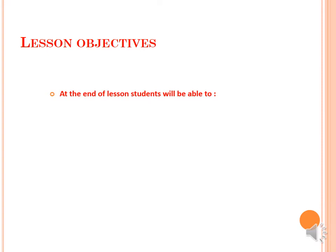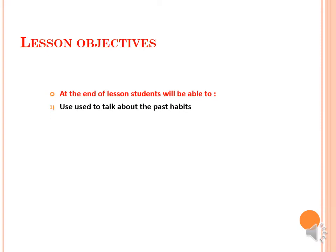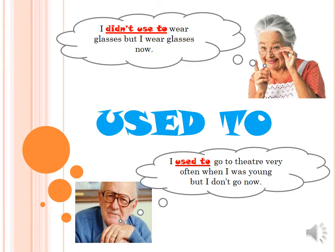At the end of the lesson, students will be able to use 'Used to' to talk about past habits. Look at the example: I didn't used to wear glasses, but I wear glasses now. Look at the second example: I used to go to the theatre very often when I was young, but I don't go now.